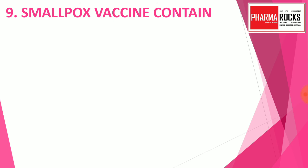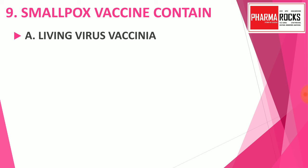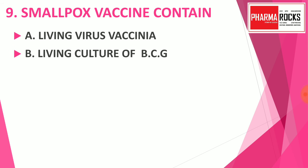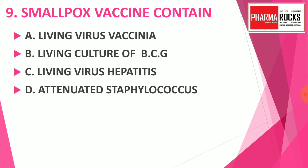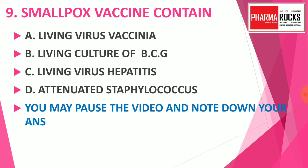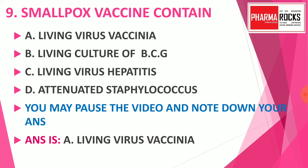Question number 9: Smallpox vaccine contains — option A: living virus vaccinia, option B: living culture of BCG, option C: living virus hepatitis, option D: attenuated staphylococcus. You may pause the video and note down your correct answer in your notebook, then you can do a self-evaluation of your test. The correct answer is option A: living virus vaccinia.